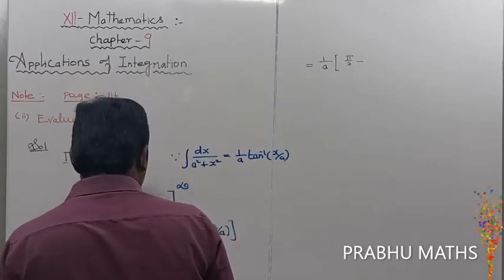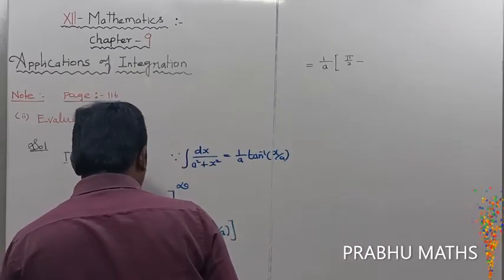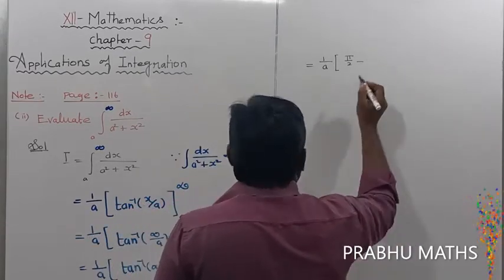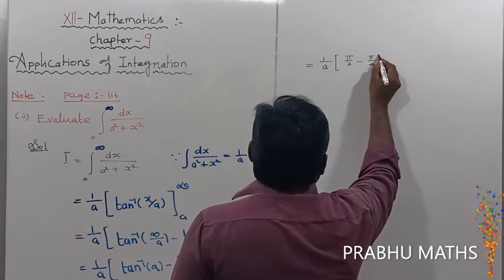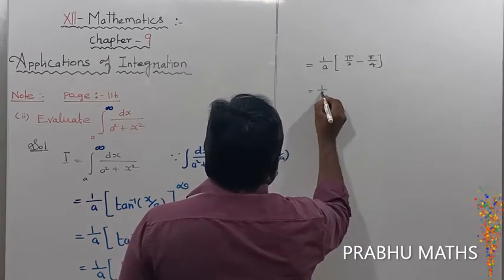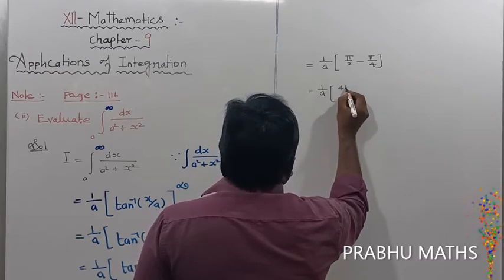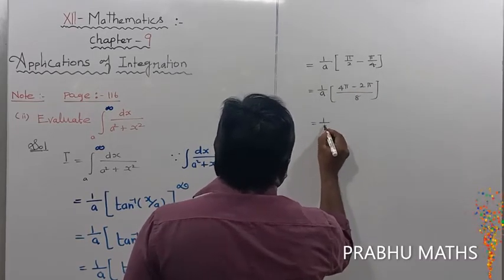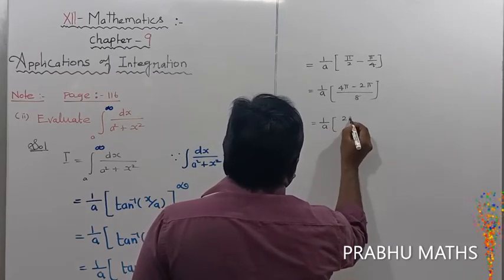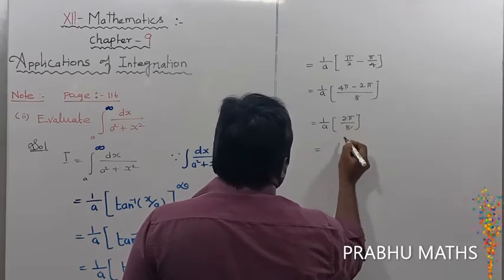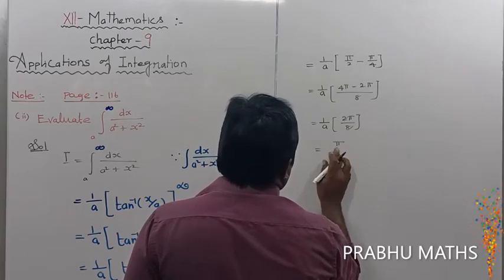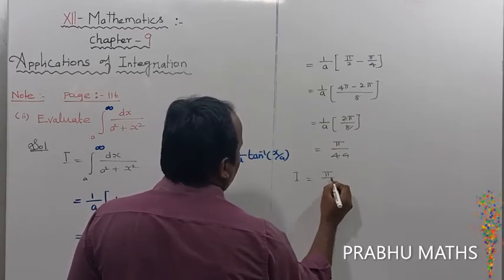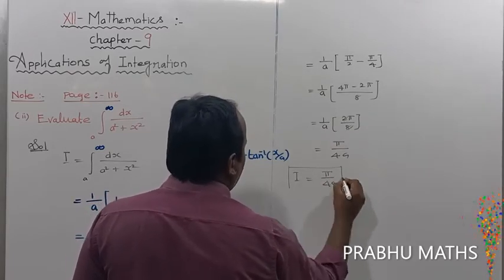So that is equal to 1 over a times [pi over 2 minus pi over 4]. That equals 1 over a times pi over 4, which simplifies to pi divided by 4a. So we get the solution: I equals pi divided by 4a.